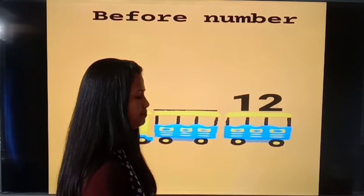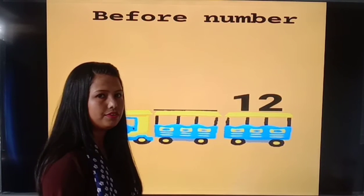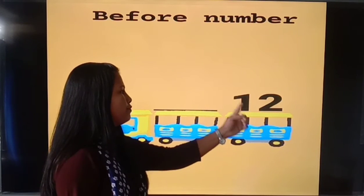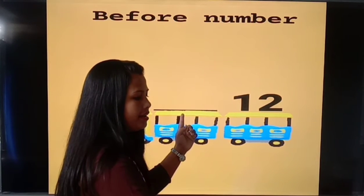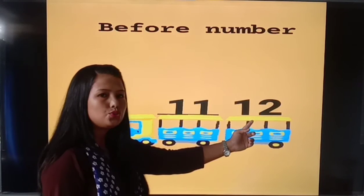Next. One, two, twelve. What comes before twelve? One, one, eleven. Eleven comes before twelve.